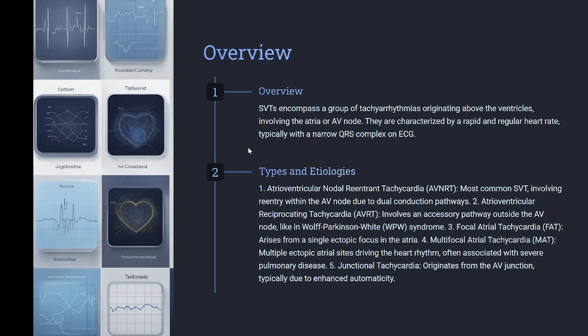3. Focal atrial tachycardia arises from a single ectopic focus in the atria. 4. Multifocal atrial tachycardia involves multiple ectopic atrial sites driving the heart rhythm, often associated with severe pulmonary disease. 5. Junctional tachycardia originates from the AV junction, typically due to enhanced automaticity.